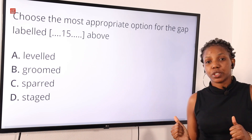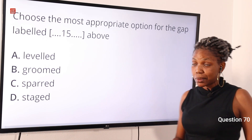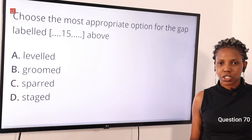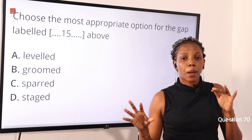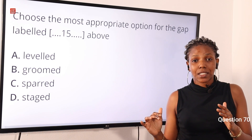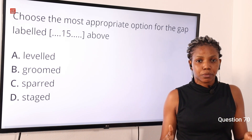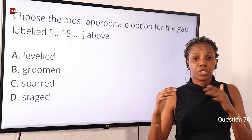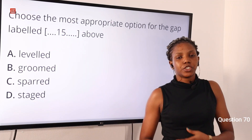Question 70: Choose the most appropriate option for the gap — option A: leveled, option B: groomed, option C: sparred, option D: staged. The answer is groomed. When you read this passage, the writer is describing a contestant that is not trained well. The right choice of word to use is 'groomed,' because groomed means to prepare or train. So option B is the correct answer.